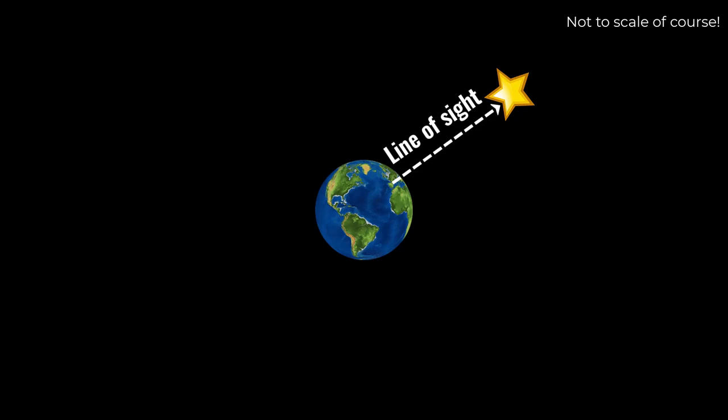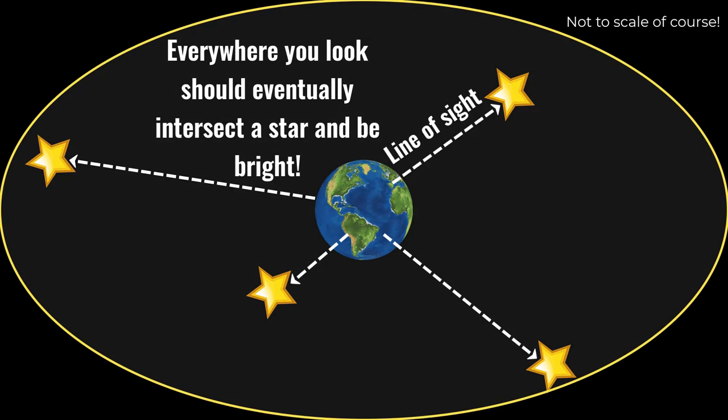In an infinite universe, at some point, every line of sight would intersect a star, and so that portion of the sky would be bright. So over the entire sky, you should expect every part, every small portion, to be in line with a distant star, and so the entire sky should be bright, even at night time.